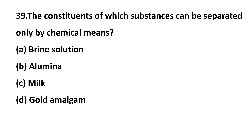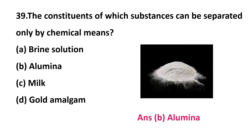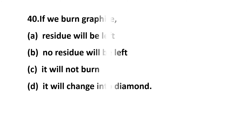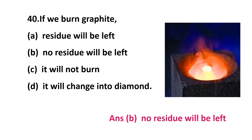Question 39: the constituents of which substance can be separated only by chemical means — option A: print solution, option B: alumina, option C: milk, option D: gold amalgam? The correct answer is option B: alumina. Question 40: if we burn graphite — option A: residue will be left, option B: no residue will be left, option C: it will not burn, option D: it will change into diamond? The correct answer is option B: no residue will be left.